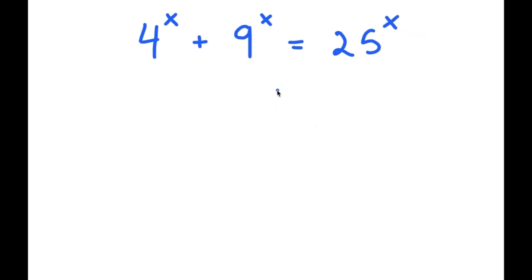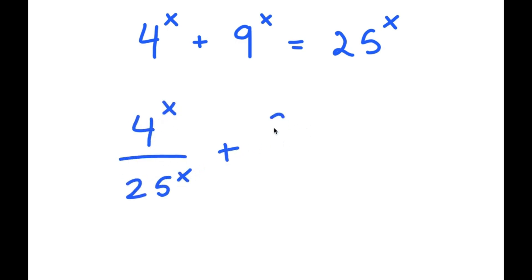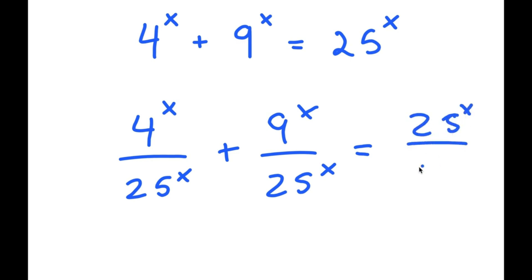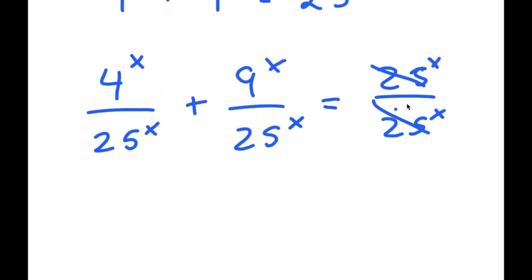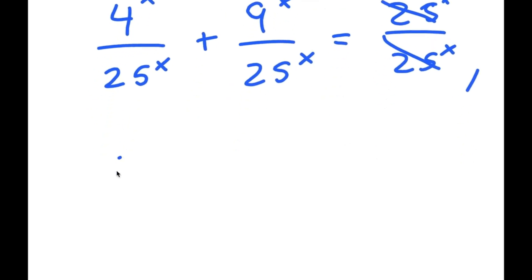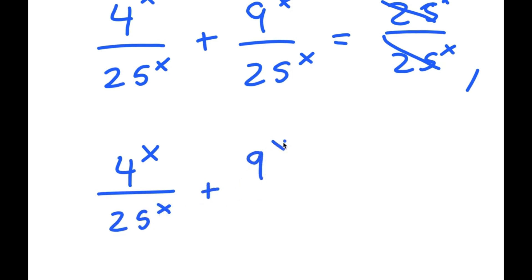To solve this, I'm going to start off by dividing every term by 25 to the power of x. So I get 4 to the power of x divided by 25 to the power of x, plus 9 to the power of x divided by 25 to the power of x, is equal to 25 to the power of x divided by 25 to the power of x. The 25 and 25 cancel out to give 1, so now I have 4^x over 25^x plus 9^x over 25^x is equal to 1.